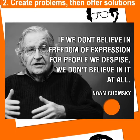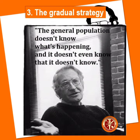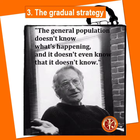3. The Gradual Strategy. To get acceptance of an unacceptable degree, just apply it gradually, dropper by dropper, over consecutive years. That is how radically new socio-economic conditions were imposed during the 1980s and 1990s: the minimal state, privatization, precariousness, flexibility, massive unemployment, wages that do not guarantee a decent income — so many changes that would have brought about a revolution if they had been applied all at once.